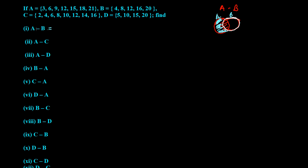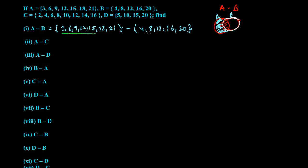Now let's try to solve this. A difference B. First, A is {3, 6, 9, 12, 15, 18, 21} and B is {4, 8, 12, 16, 20}. It should be in A but not in B. So check those numbers which are in A but not in B. 3 is in A but not in B. Similarly, 6 is in A but not in B. 9 is in A but not in B. 12 — yes, 12 is in B, so we are not going to take it.